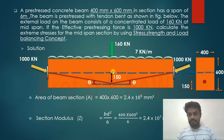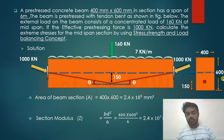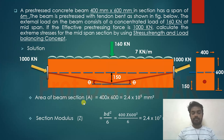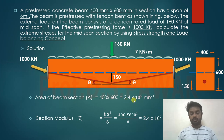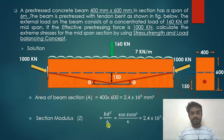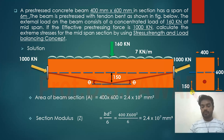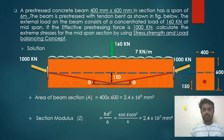We have to calculate the extreme stresses at the mid-span section using all three concepts. The cross-sectional area of the beam is 400 × 600 = 2.4 × 10⁵ mm². The section modulus is bd²/6, which gives 2.4 × 10⁷ mm³.